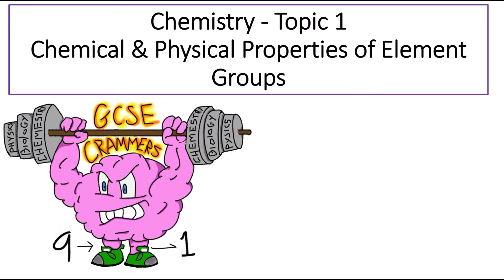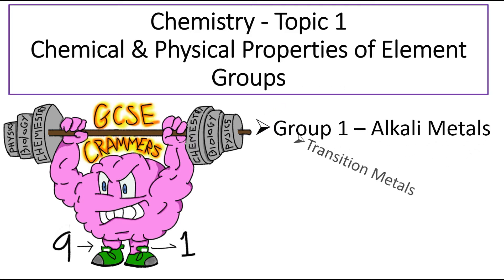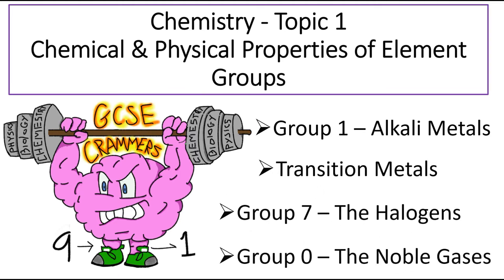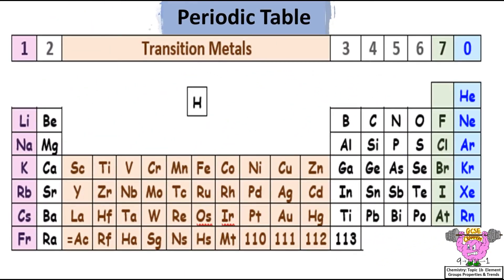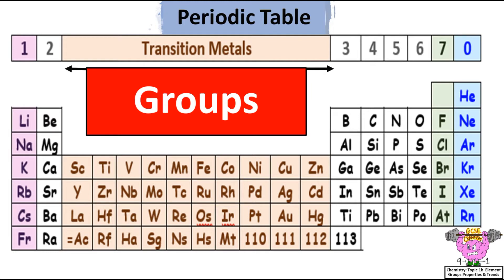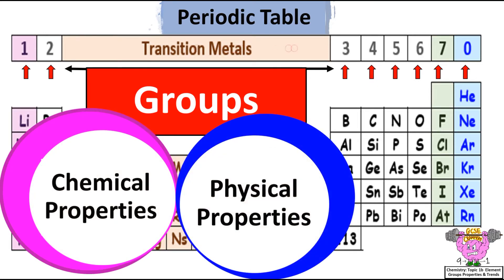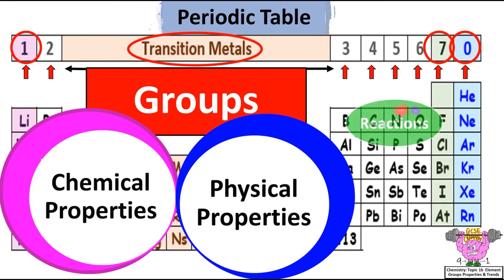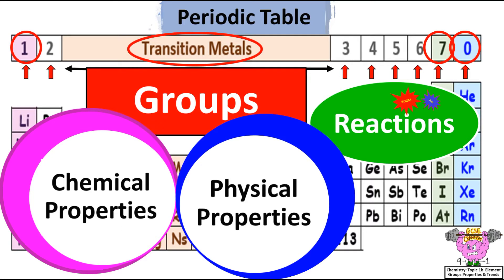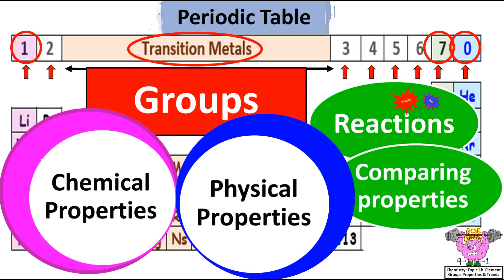Today we're revising Chemistry Topic 1, Chemical and Physical Properties of Element Groups, covering Group 1 Alkali Metals, Transition Metals, Group 7 the Halogens, and Group 0 the Noble Gases. A copy of the periodic table will be given to you in the exams, so you don't have to learn all the names in each group. The group number tells you how many atoms are in the last shell of an element. Learning the facts about each group will help you predict reactions based on position in the periodic table, and compare the properties of different groups.